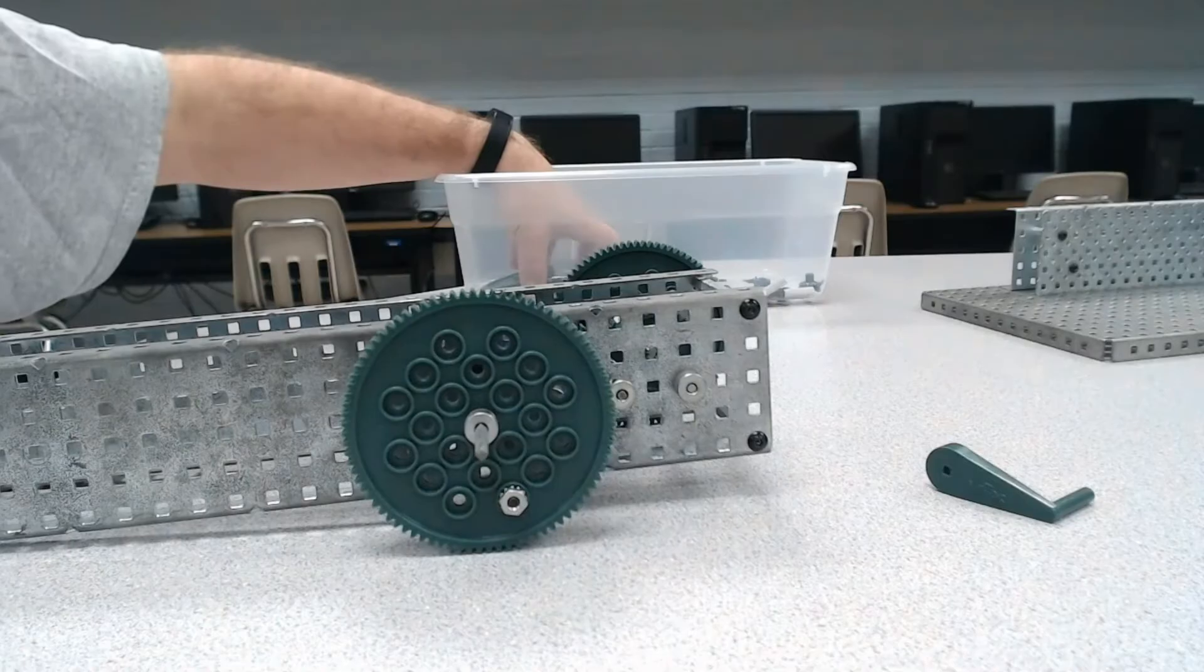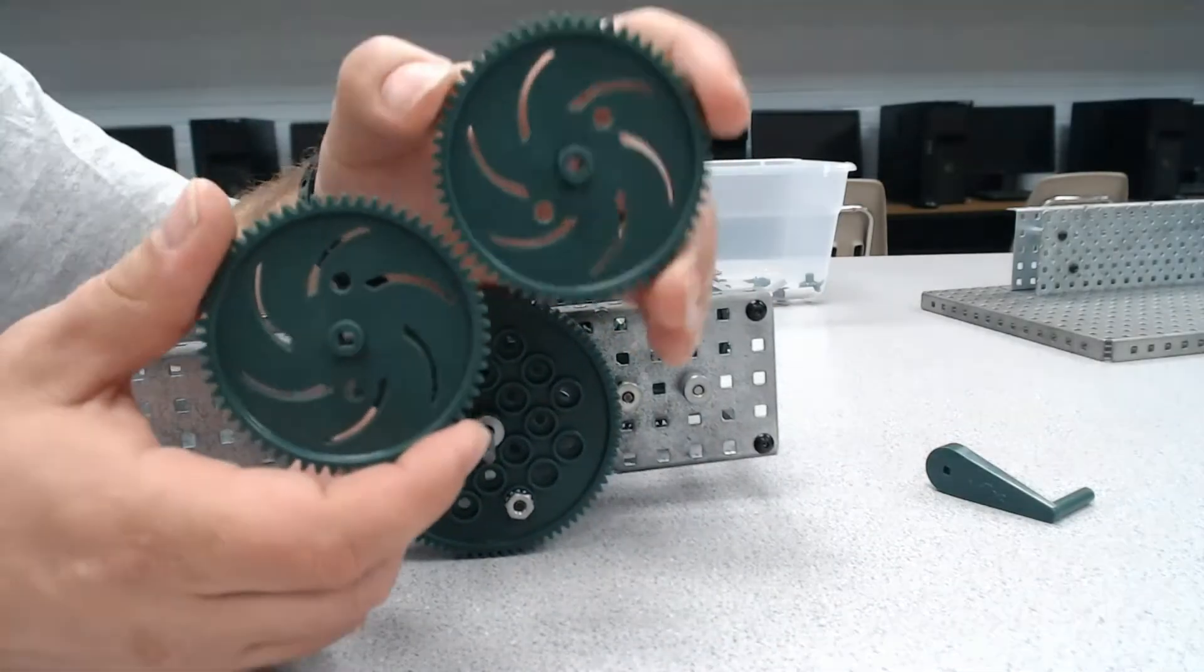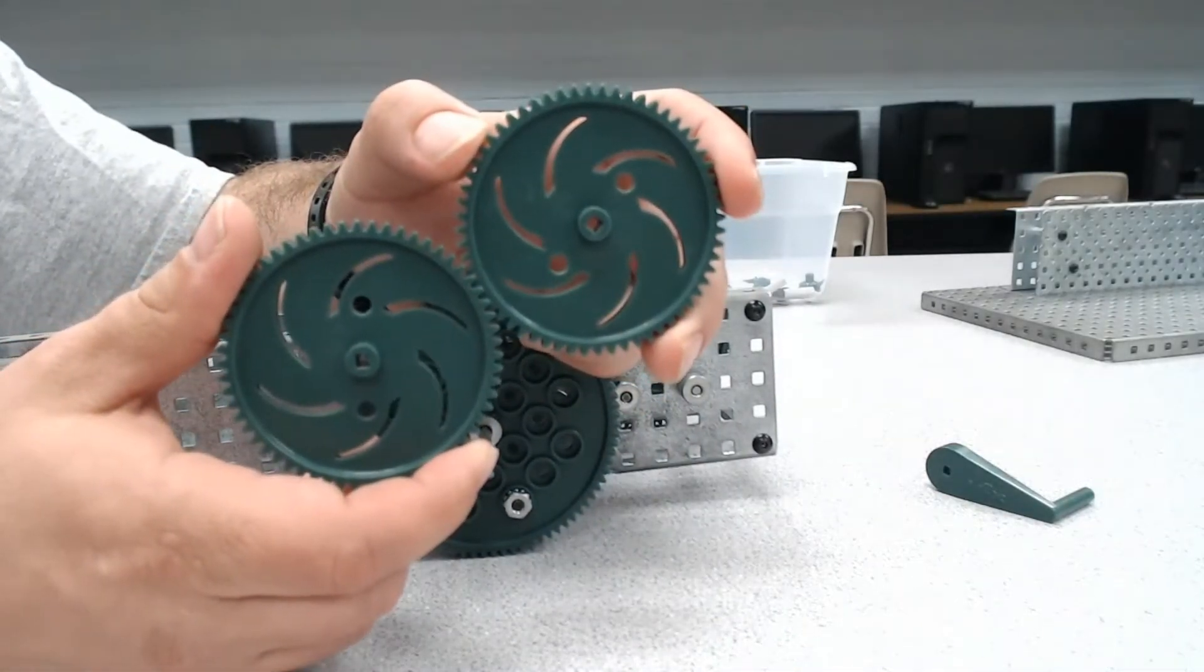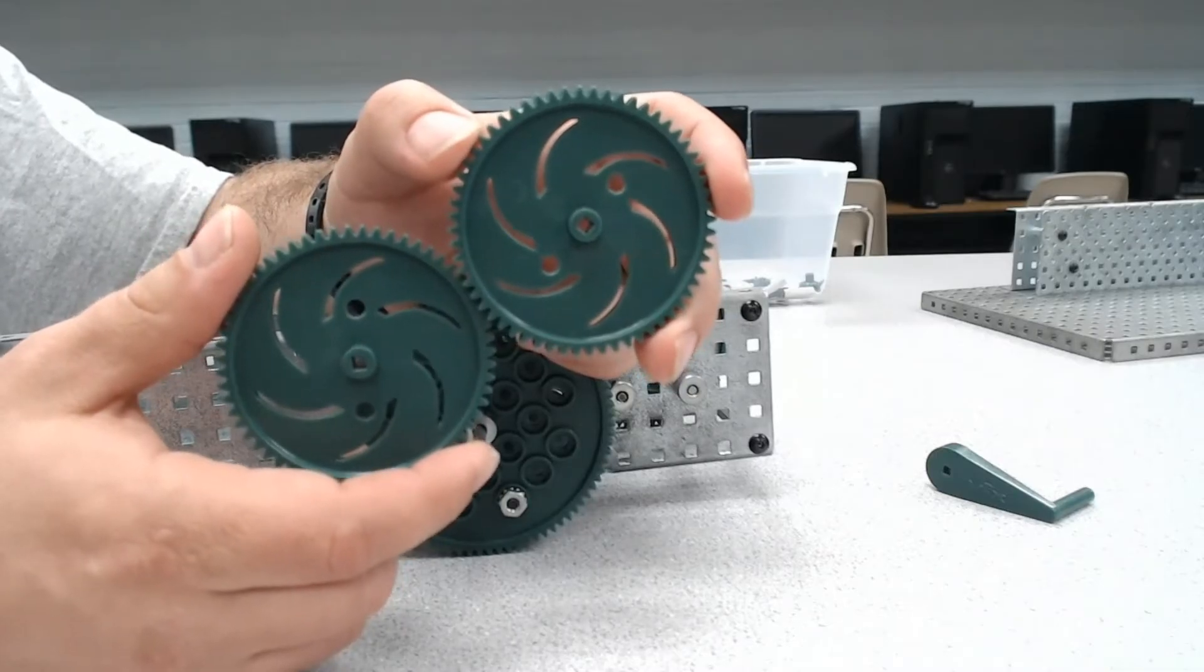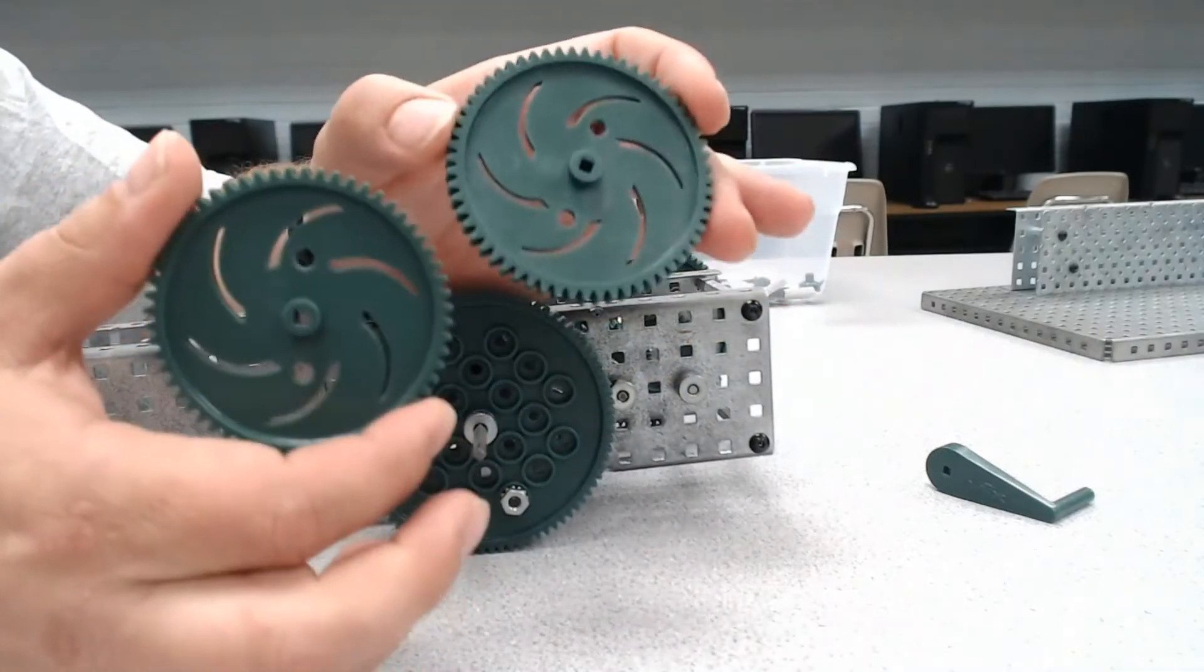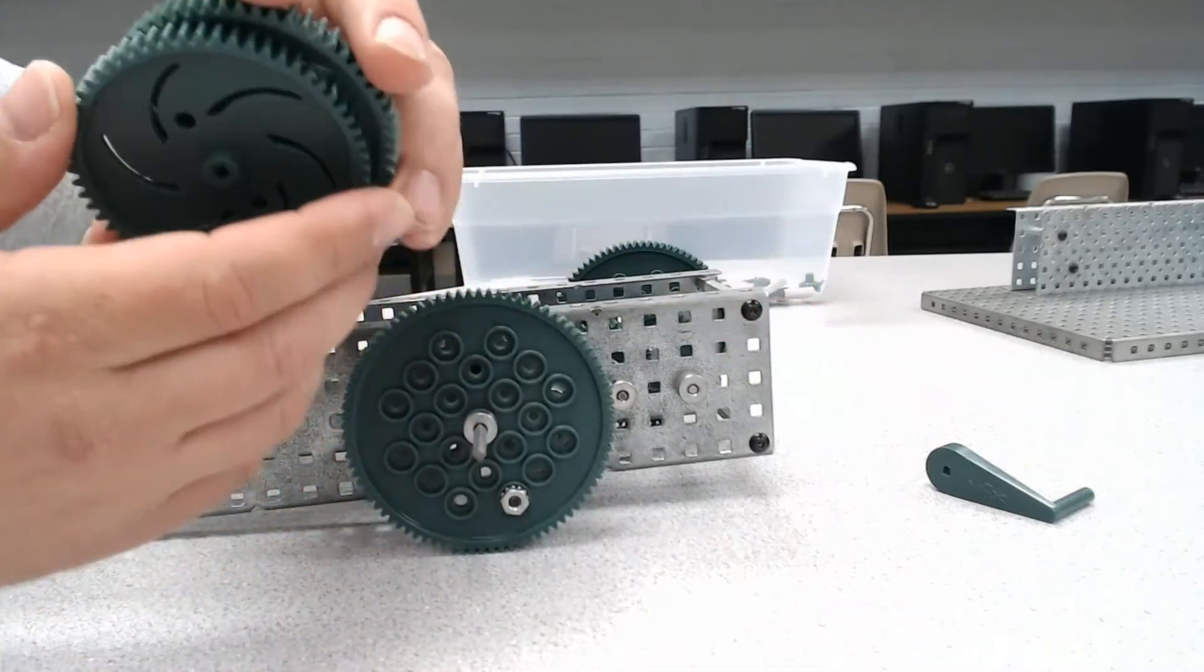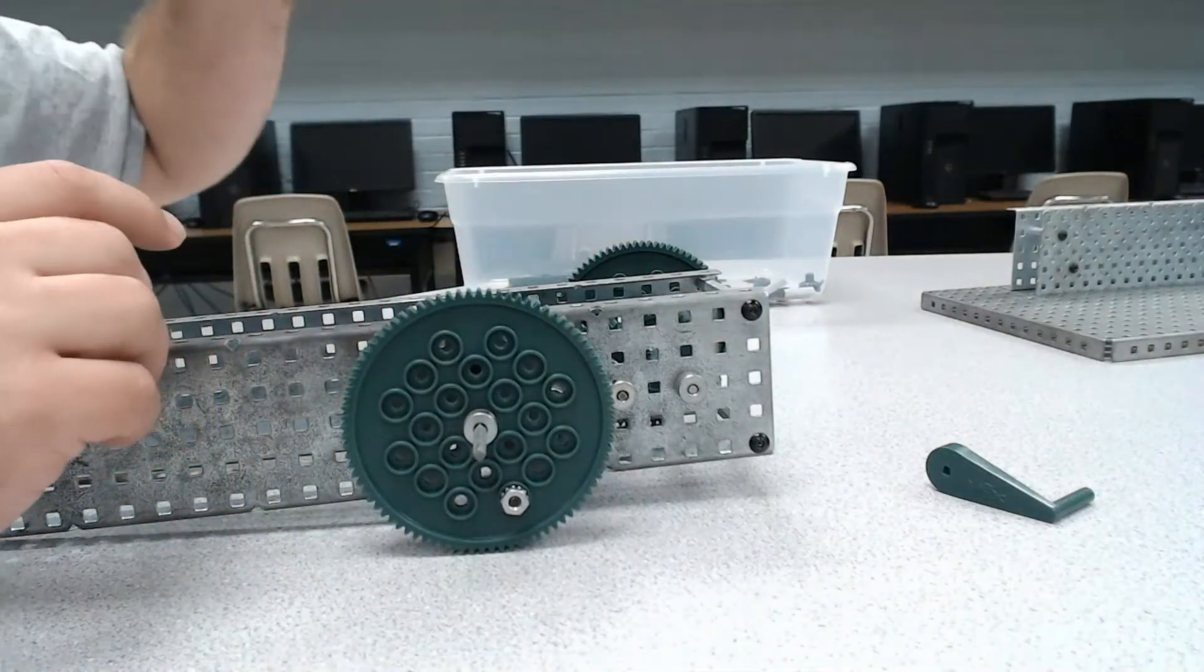In our last video, we looked at a simple gear where we had two gears directly connected. This makes it real easy to understand how gear ratios work because you only have these two to work with. So that's going to be a little different than what we've got here.